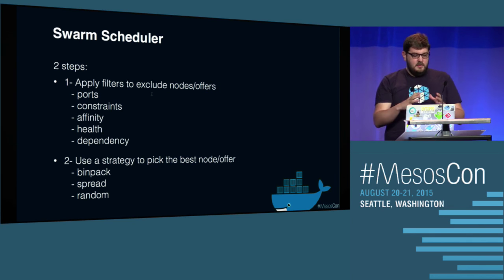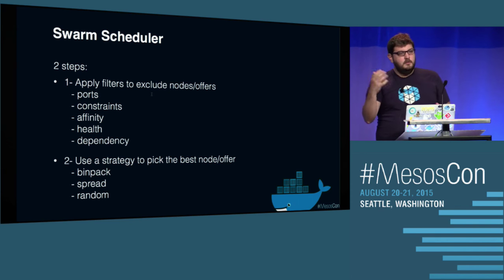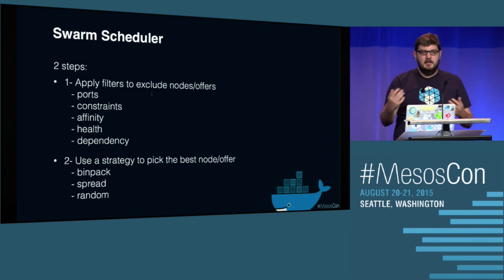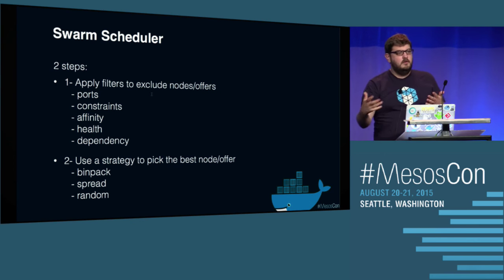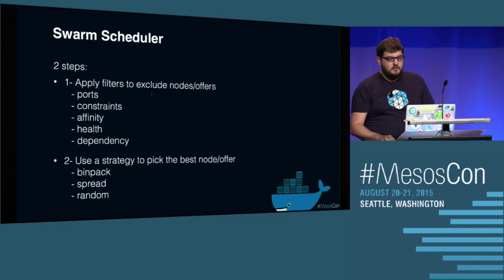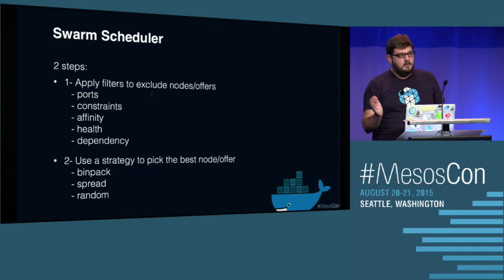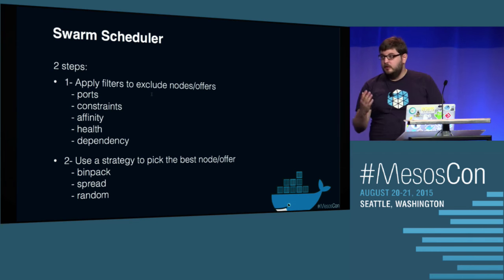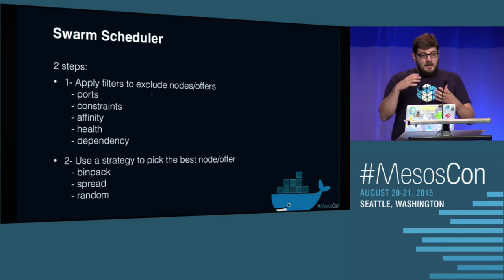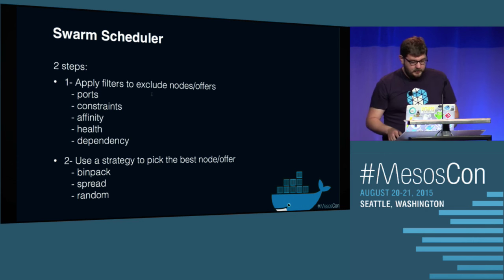Quick look at the internals of Swarm — it's quite simple. First, we receive offers from the Mesos master like any other framework. Then we apply filters to exclude offers. For example, the port filter: if you want to start a web container and need port 80, the port filter excludes all offers where port 80 is not available. We also have constraints and affinities. After filtering, we get a subset of offers, then use a strategy to rank the offers and pick the one we want.